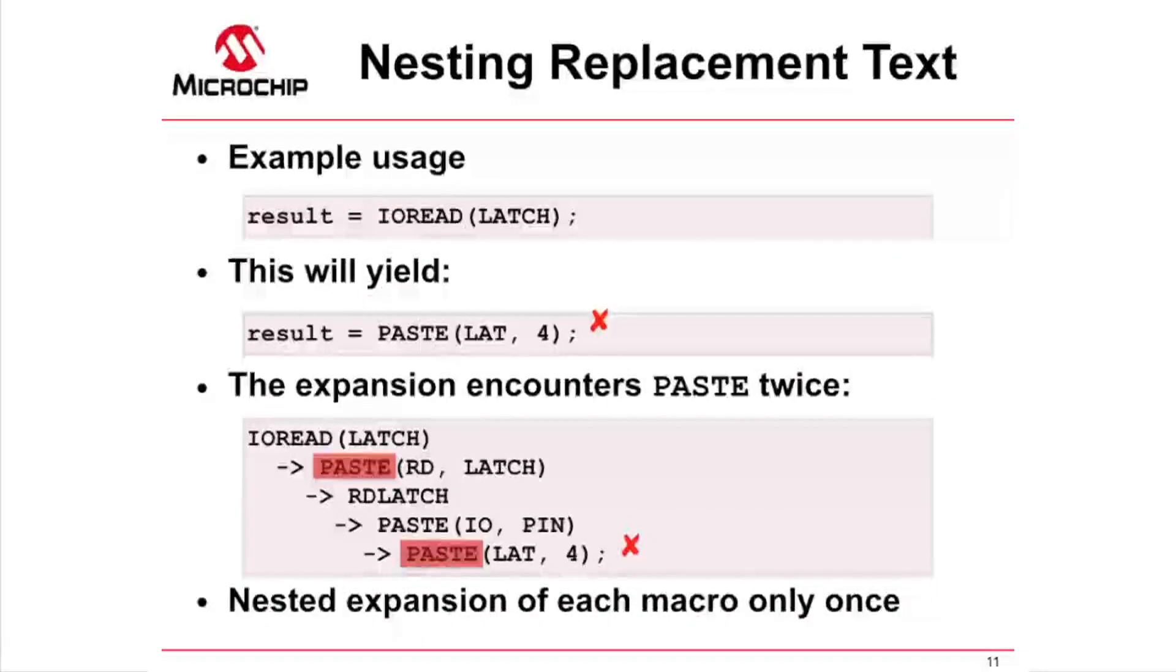So if we were to use this macro in code, as shown in the top box, we might expect it to read from PIN 4 of either the LATCH or PORT, but instead, if you check the preprocessed output or assembly list file, you'll notice that, as shown in the next code box, our PASTE macro, for some reason, did not get expanded, and the compiler unsuccessfully looks for a C function with that name. So what went wrong?